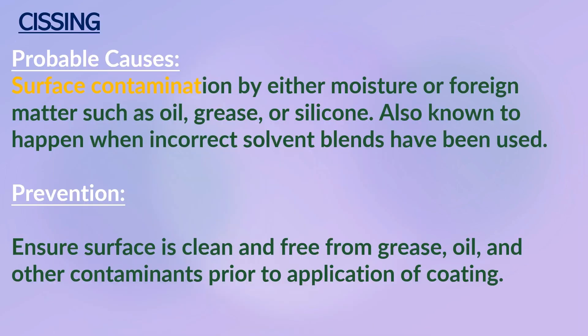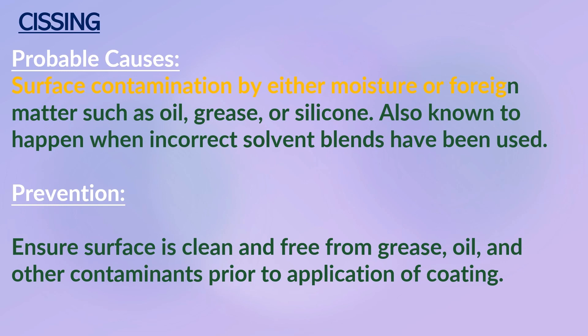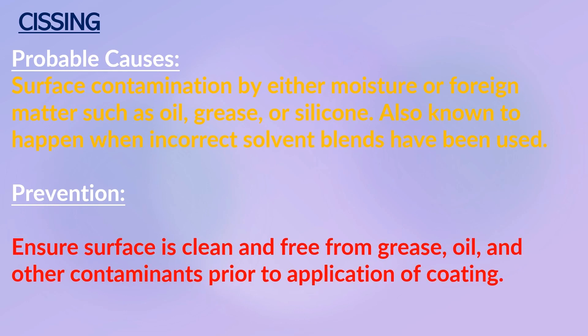Crazing: a surface break in a wet paint film where the paint has receded to expose the surface; the paint is unable to wet out the surface and can be very large. Probable causes: surface contamination by either moisture or foreign matter such as oil, grease, or silicone; also known to happen when an incorrect solvent blend has been used. Prevention: ensure the surface is clean and free from grease, oil and other contaminants prior to application of coating.